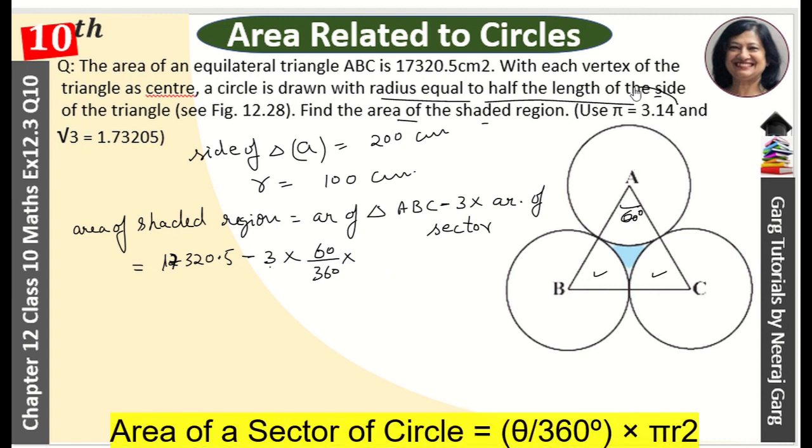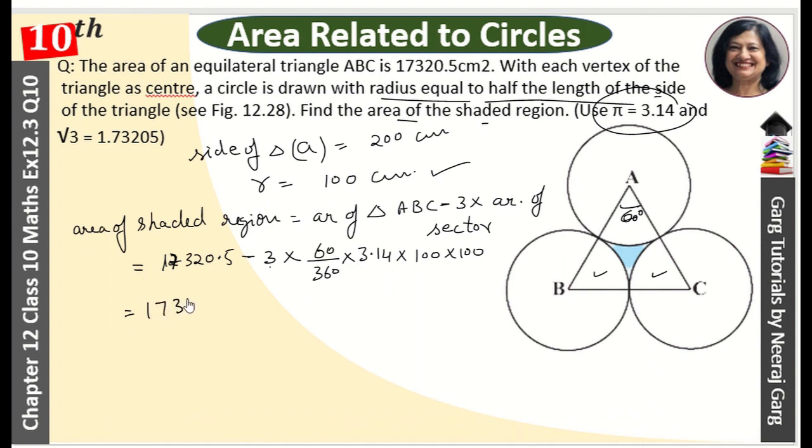Pi we have given 3.14, so the pi is 3.14 and r is 100 cm, so 100 into 100. So this is 17320.5 minus, this cancels, 6 times 3 is 18, and the calculation continues.